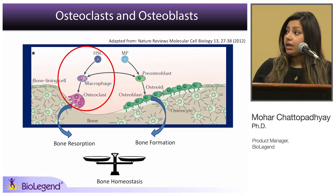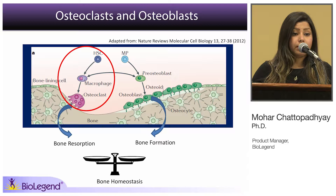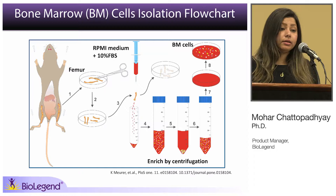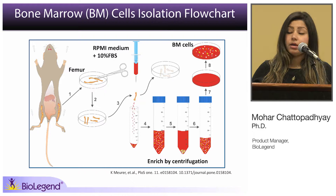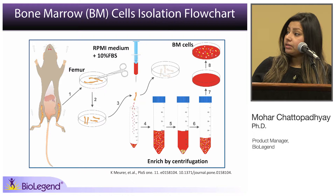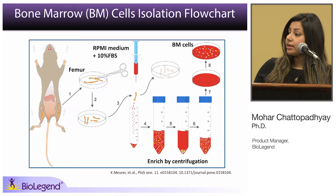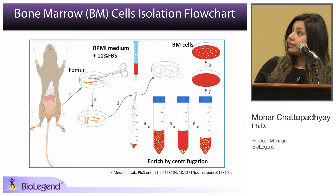In the first part of my talk, I will show you data where we used bone marrow cells and differentiated them into macrophages and then further into osteoclasts using BioLegend's reagents. One of the first things we did was obtain bone marrow cells. We took C57 black mice, removed the femur, chopped it into smaller pieces, flushed out the bone marrow using RPMI medium plus 10% FBS, collected the cells, enriched by centrifugation, and plated them as our starting material.